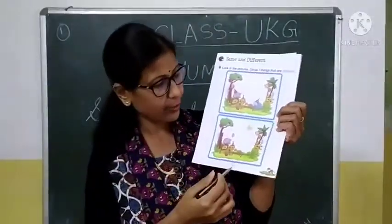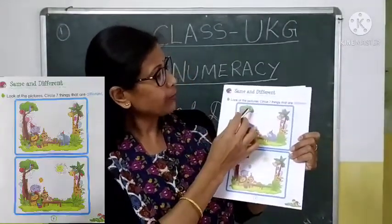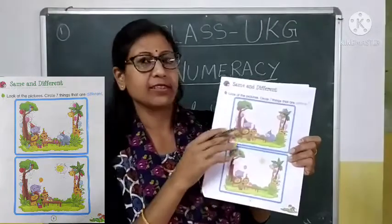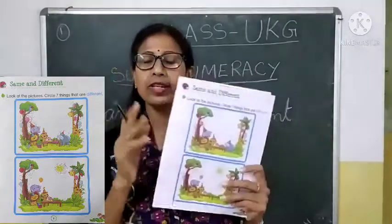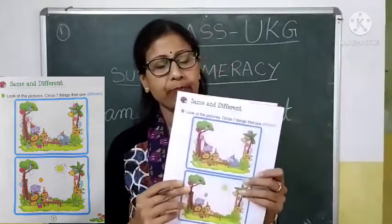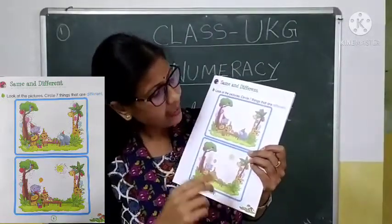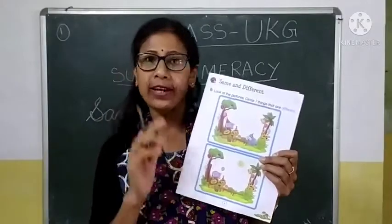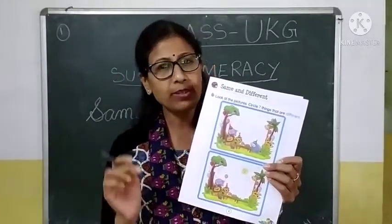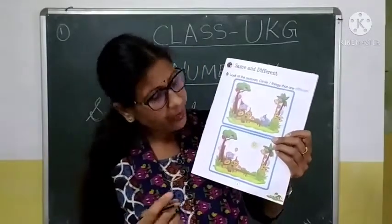This is page number three. Here it is written: look at the picture, circle seven things that are different. We have to circle seven things that are different from each other. Okay? Let's start.